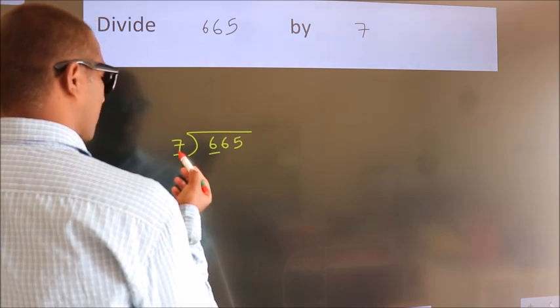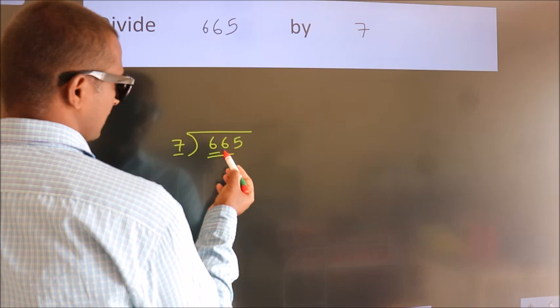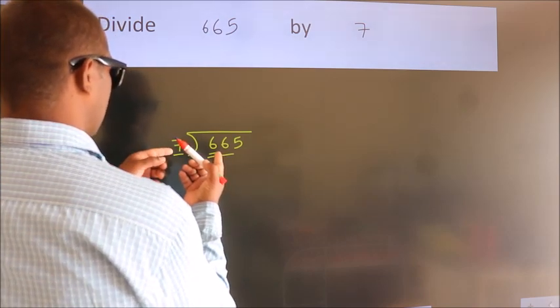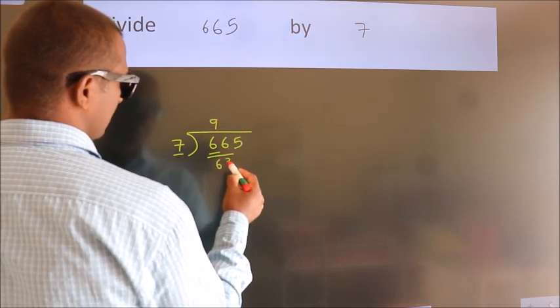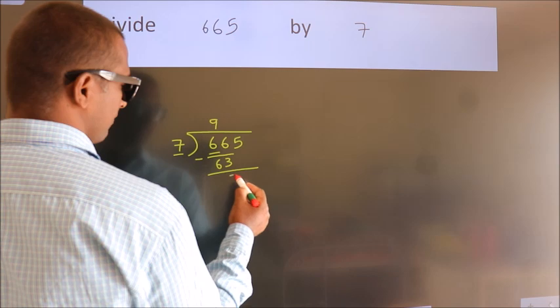So we should take 2 numbers, 66. A number close to 66 in 7 table is 7 nines, 63. Now we should subtract. We get 3.